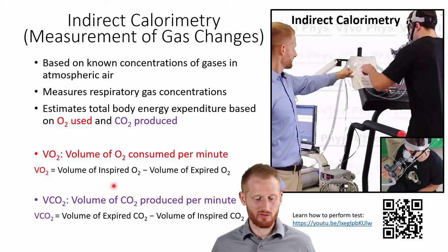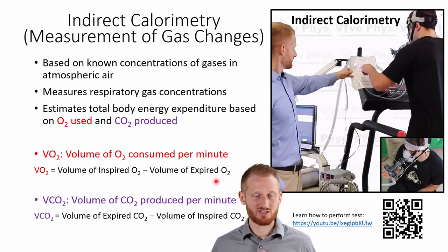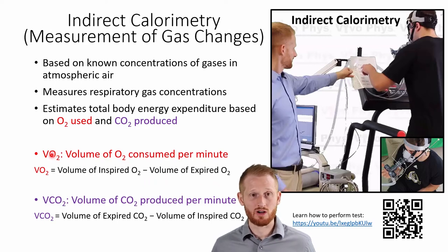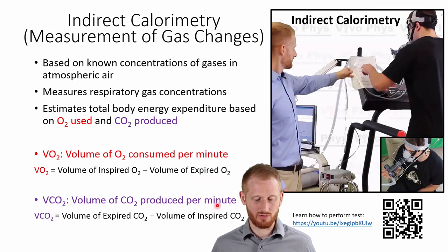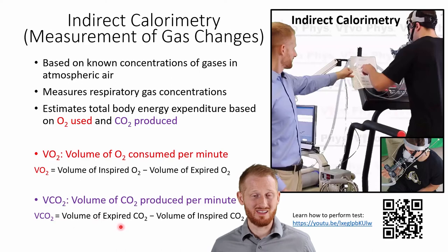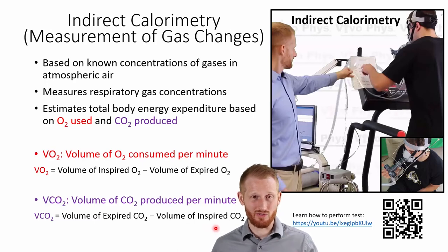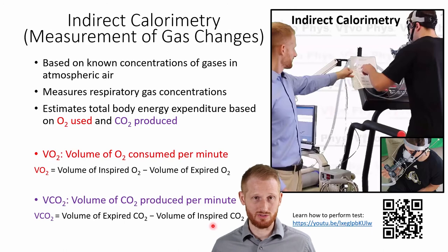VO2 is the volume of oxygen inspired (brought into the body) minus the volume of oxygen expired from the body — that difference is your oxygen consumption. VCO2 is the volume of expired CO2 minus the volume of inspired CO2, so the difference represents the CO2 your body produced. Both are expressed per minute.